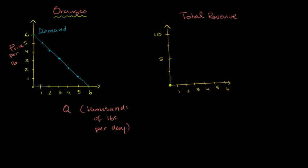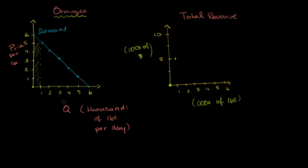If you produce one unit — and this over here is actually 1,000 pounds per day, so we'll call a unit 1,000 pounds per day — then your total revenue is one unit times $5 per pound, so it'll be $5,000. You could also view it as the area of this rectangle right over here: the height is price and the width is quantity. If you produce one unit, you're going to get $5,000. So this axis is in thousands of dollars, and the quantity axis is in thousands of pounds.